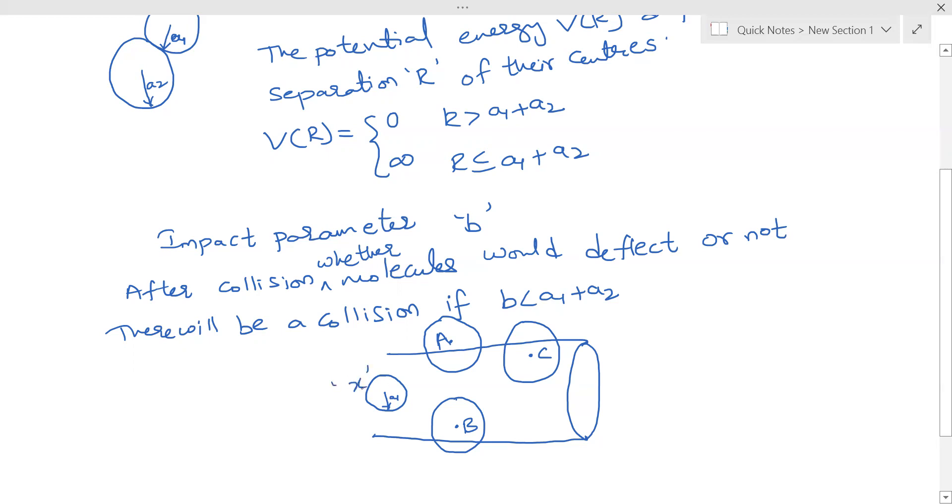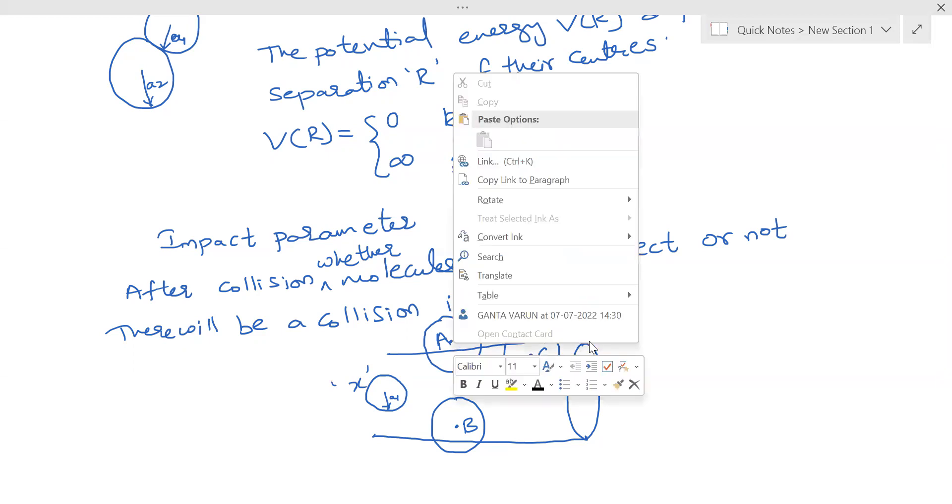Now we are determining the collisions that will happen to the molecule X. The collision will take place only if the center of molecules A, B, and C comes inside the tube. The center of molecule A is not inside the tube, it is outside.